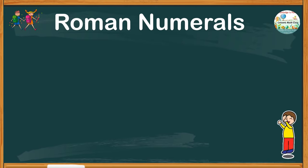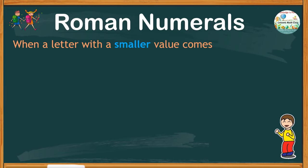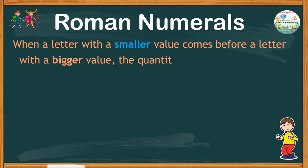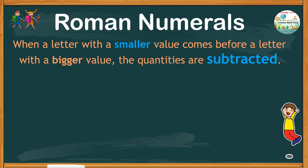When writing Roman numerals in regular numbers, we don't always add. Because when a letter with a smaller value comes before a letter with a bigger value, the quantities are subtracted.